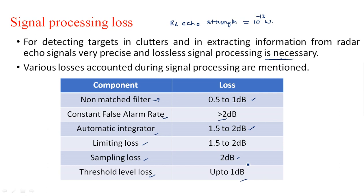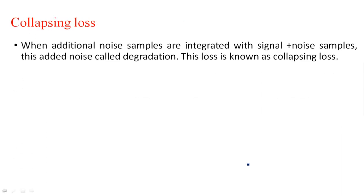The next one is collapsing loss, indicated by Lc. What do you mean by collapsing loss? We are already receiving noise samples from the environment — thermal noise is present within the radar. If any additional noise is added because of the receiver's internal components on top of these noisy signal-plus-noise pulses, that type of loss is nothing but collapsing loss. It degrades the signal quality and information.